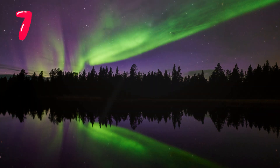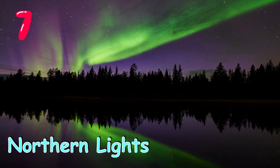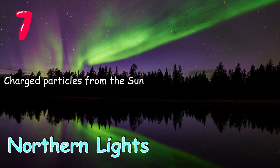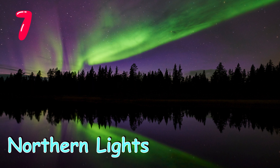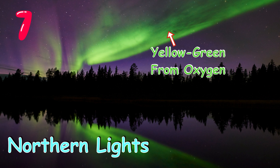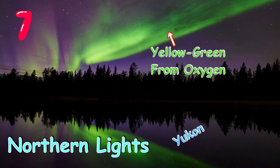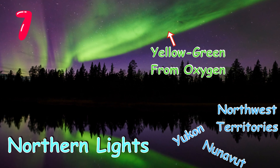Number seven: northern lights. Northern lights are observed near the magnetic north pole. When charged particles from the sun strike air particles in Earth's atmosphere, the air lights up. The most usual yellow-green color comes from oxygen molecules located about 60 miles above the Earth. Best places to watch northern lights in Canada are Yukon, Nunavut, and Northwest Territories.